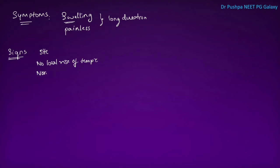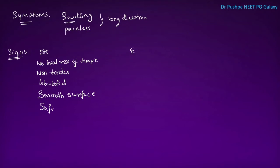The swelling is non-tender; if tender, it is called Dercum's disease. The shape is usually lobulated with a smooth surface, and the consistency is soft. The edge is very important — it is soft, compressible, and slips away from the examining finger. This is called the slip sign, which helps differentiate lipoma from any cyst.